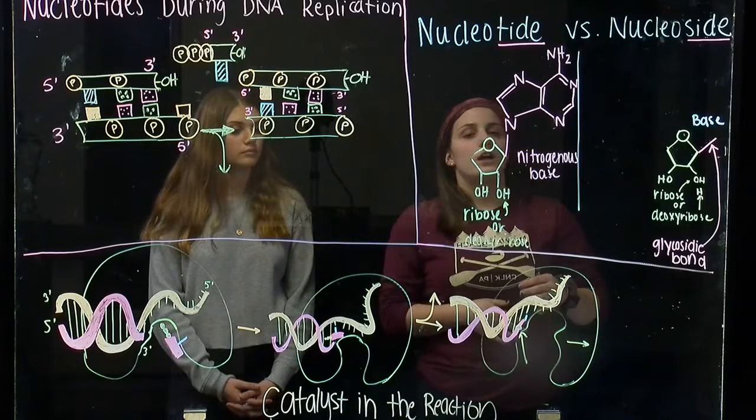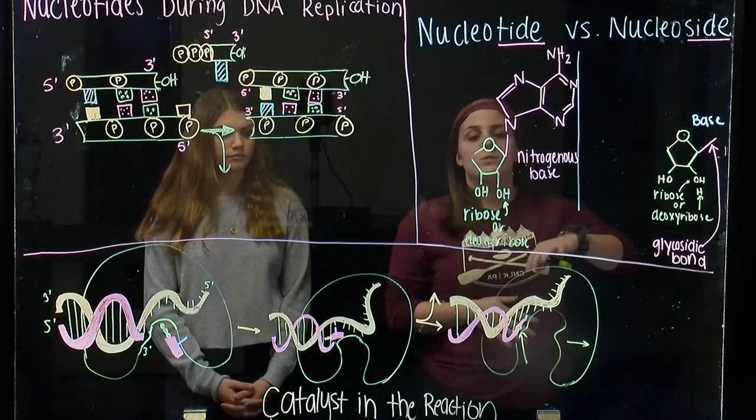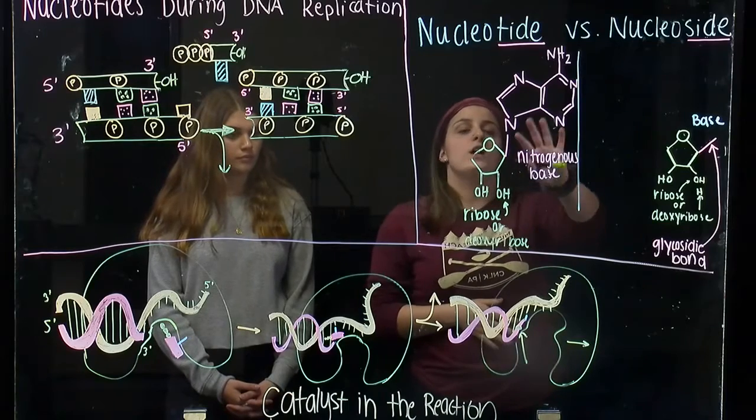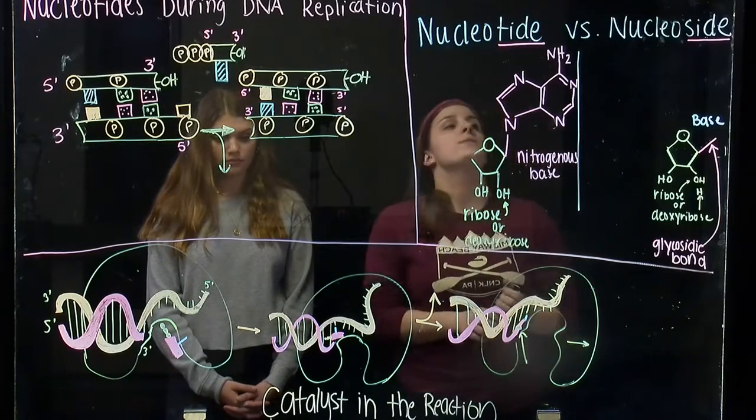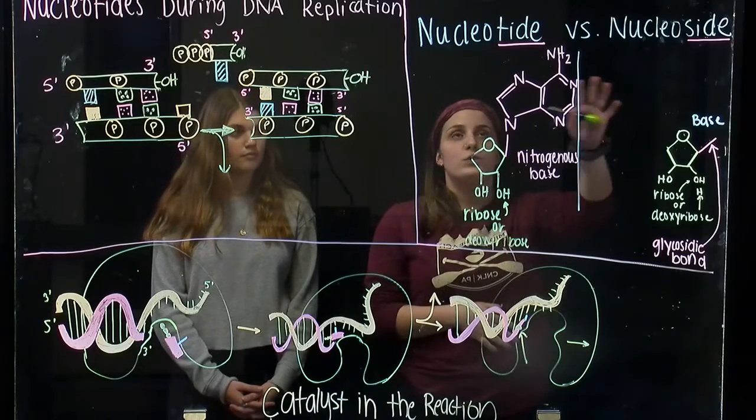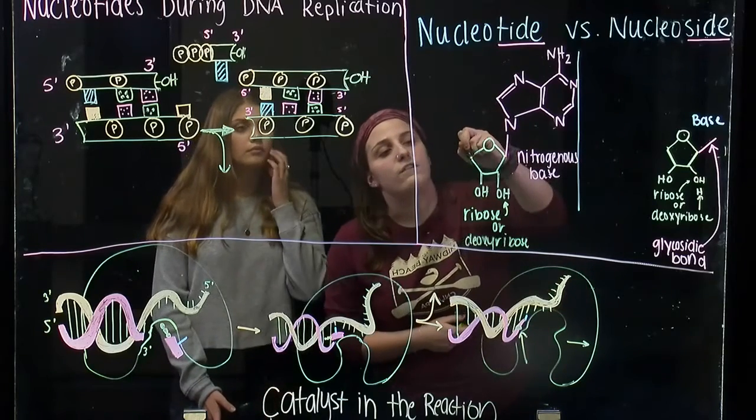So what we have here are two structures of nucleosides, which means there's a sugar connected to a nitrogenous base. And the sugar can be ribose or deoxyribose. And to go from a nucleoside to a nucleotide, you just add a phosphate group.